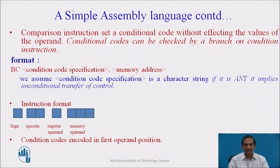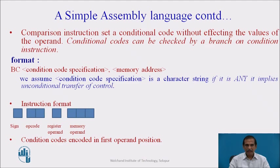A comparison instruction sets a condition code without affecting the values of the operands. The condition codes can be checked by a branch on condition instruction. It has the format BC followed by a conditional code specification and then a memory address. The conditional code specification is a character string; if it is 'ANY', it implies unconditional transfer of control. All instructions are in a format with a sign, opcode, register operand, and memory operand. The conditional codes are encoded in the first operand position and may be numbered from 1 to 6, having values such as less than, greater than, equal to, etc.